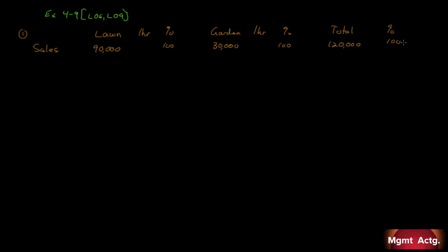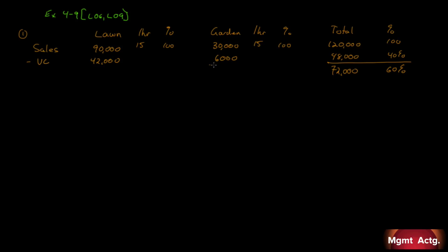Both services are billed at $15 per hour. Variable costs are $42,000 for lawn and $6,000 for garden, totaling $48,000. That $48,000 of $120,000 is 40%, leaving a total contribution margin of $72,000 — an overall contribution margin ratio of 60%. Garden's contribution margin is $24,000, which is 80% of $30,000, so variable costs for garden are 20%.